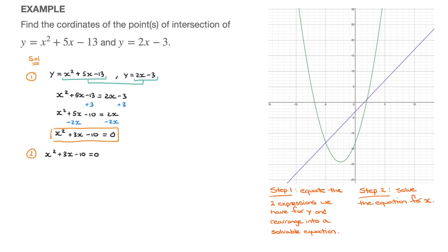Since the leading coefficient — the number multiplying x squared — is 1, to factor this quadratic we're looking for two numbers p and q such that their sum p plus q equals the middle coefficient, which is 3, and their product p times q equals the constant term, which is negative 10. Either you can see what p and q have to be right away, but if not, I'd suggest focusing on the pairs of factors of 10.